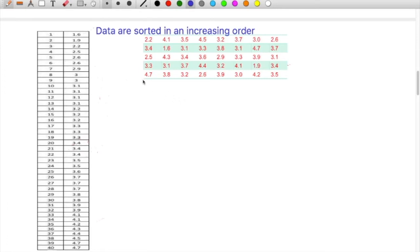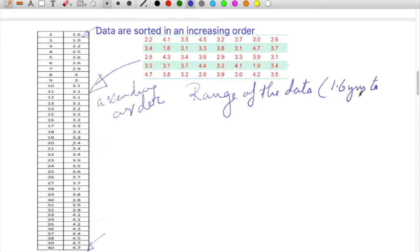Now we would like to calculate the median. For that, the first step is to transform the data in an ascending order. When we have this order from starting from 1.6 to 4.7, it defines the range of the data from 1.6 years to 4.7 years. Now we are looking for the median.